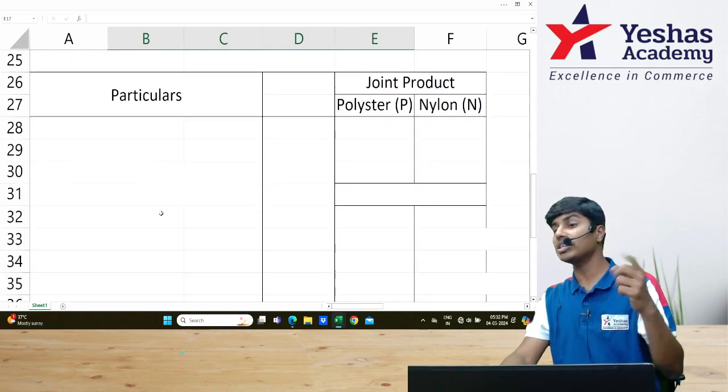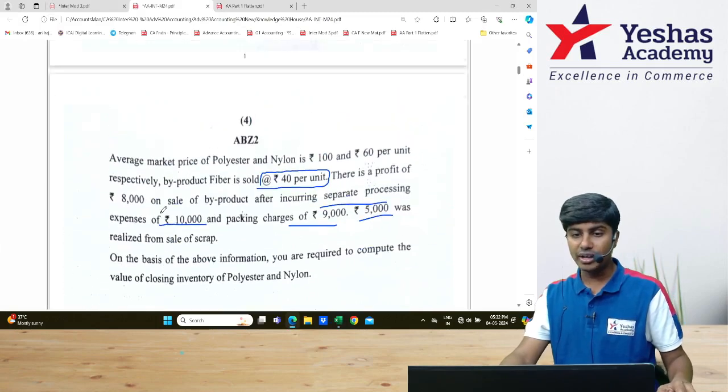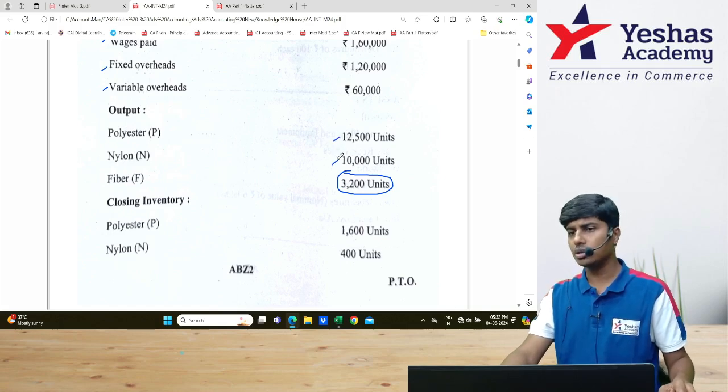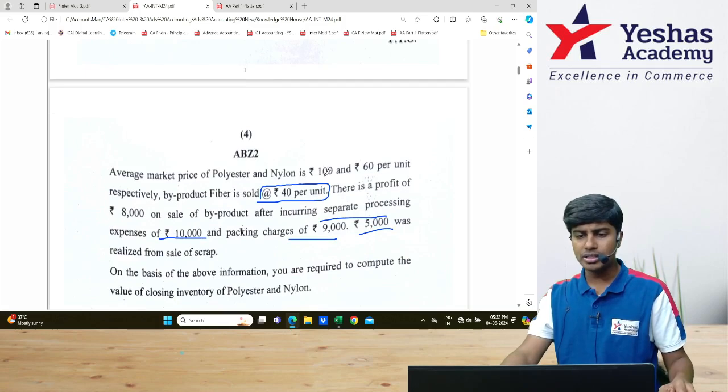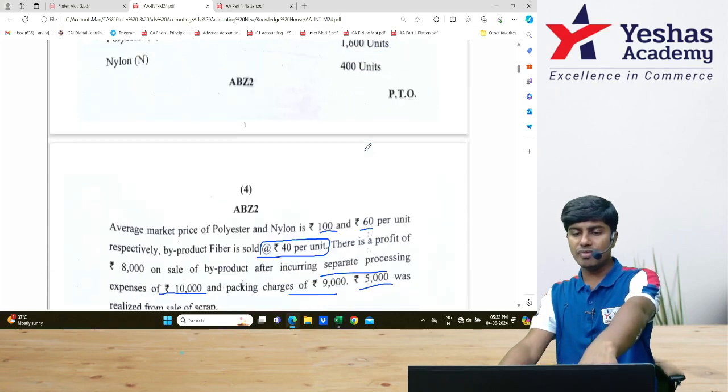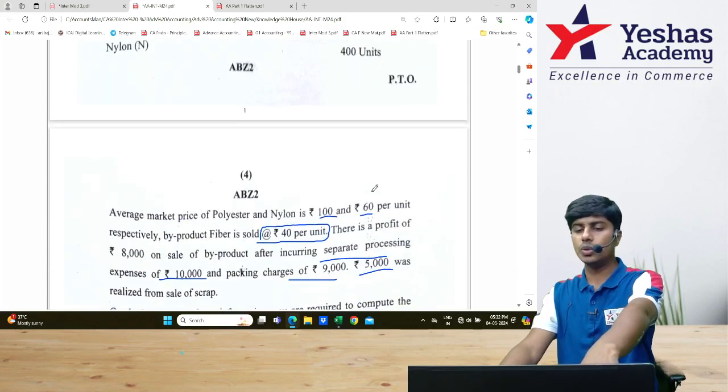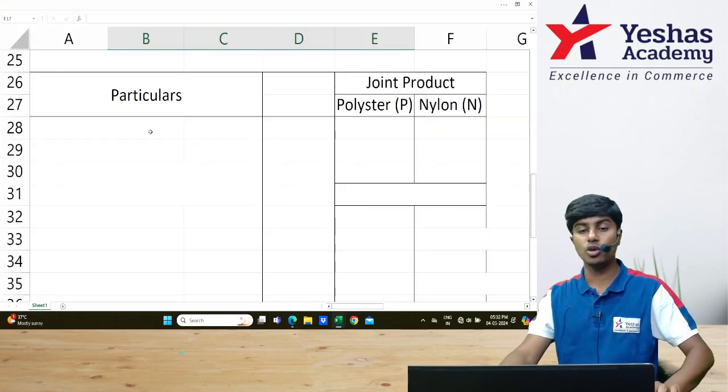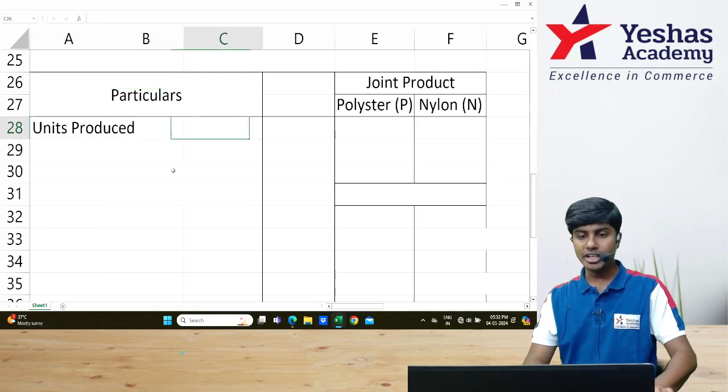How do I allocate on the basis of their sales value? Observe. Polyester output is 12,500, nylon output is 10,000, and their selling price is ₹160 and ₹60. I will do 12,500 into 100 and 10,000 into 60. By doing this, I will get sales value and identify ratio of that sales value.